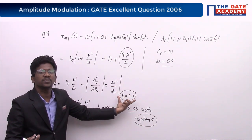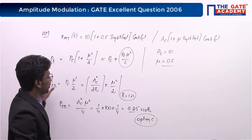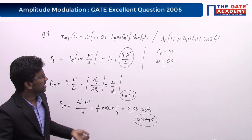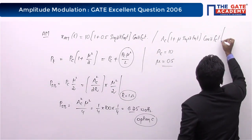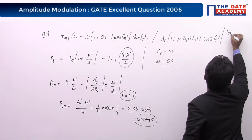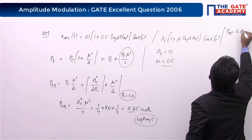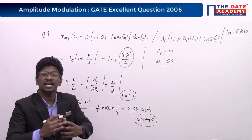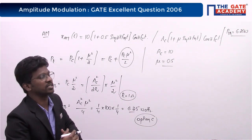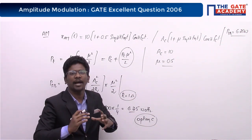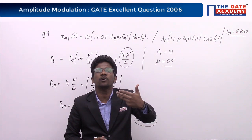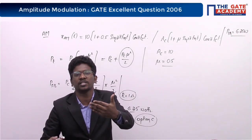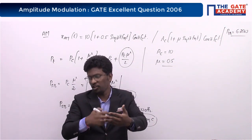The conclusion for this question: sideband power = 6.25 watts. Whenever linked questions are given, always write down the conclusion of one question, because it will be useful for solving the next question — you won't need to recalculate that value again.